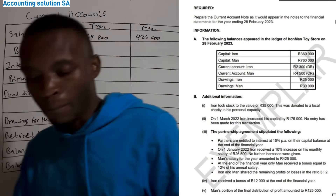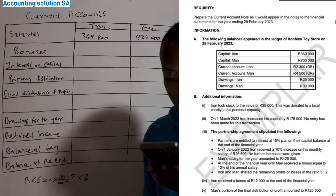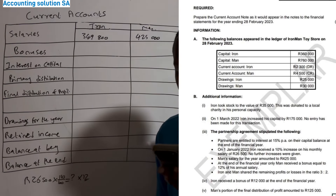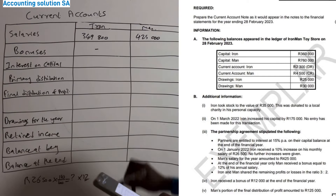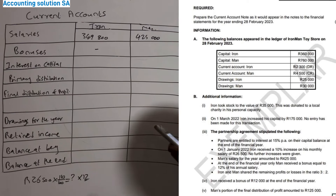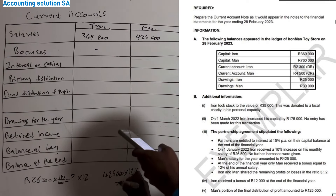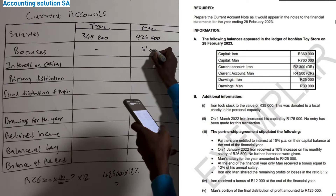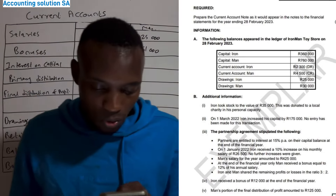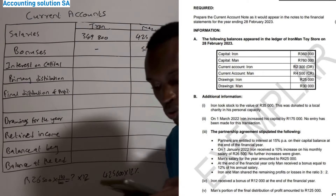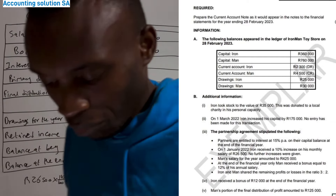We multiplied by 12 because the salary was given as a monthly figure. Next: at the end of the financial year, Men receives a bonus equal to 12% — Iron had no bonus. If you calculate 425 000 × 12%, that gives you 51 000. Also, Iron and Men share the remaining profit and loss in a ratio of 3:2 — Iron gets three parts, Men gets two parts.